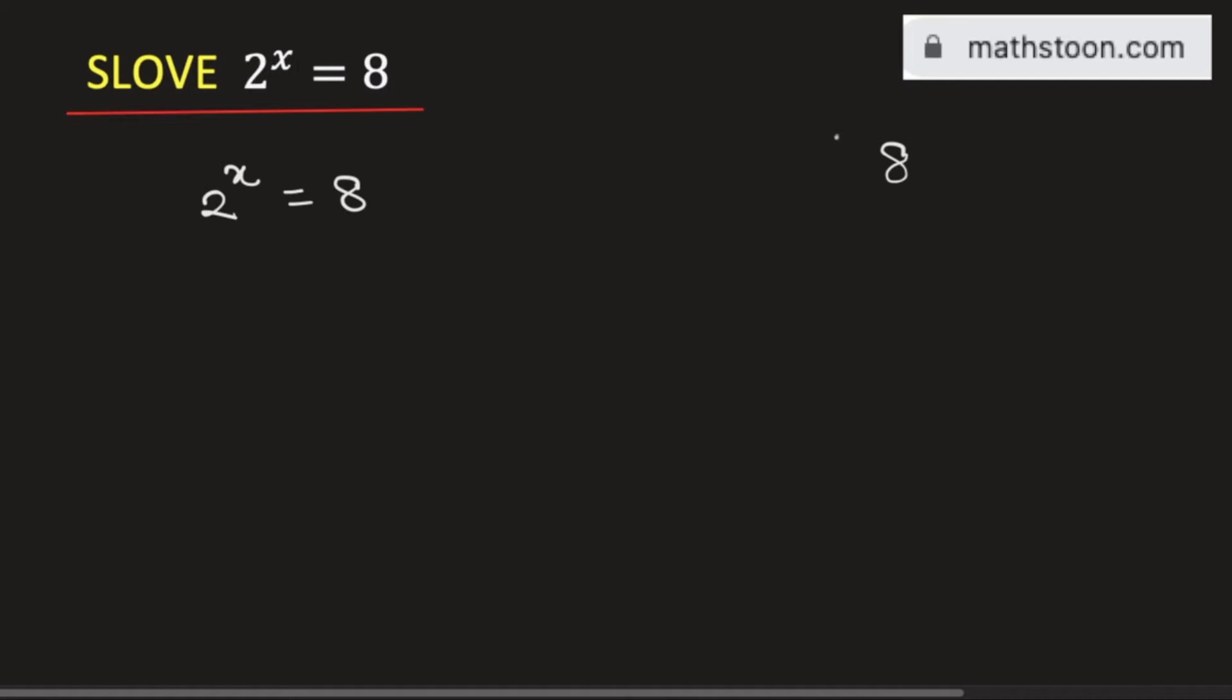See that 8 is an even number, so we can divide it by 2. Then we get 4. Again, it is an even number, so we can divide it by 2 and then we get 2. And 2 is divisible by 2, so we get 1.